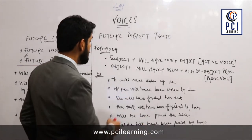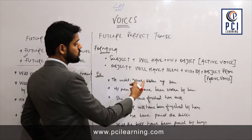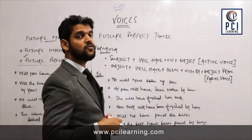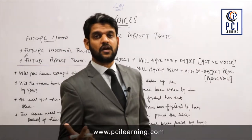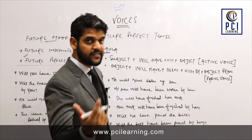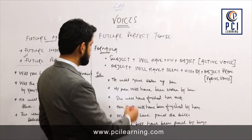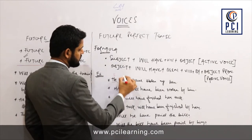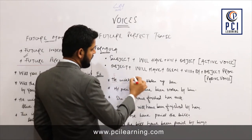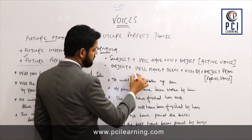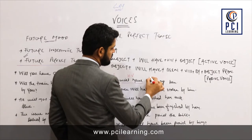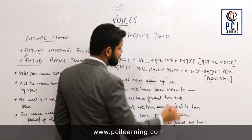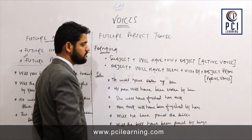Moving towards the first example: 'He will have stolen my pen' — meaning 'wo mera pen chura chuka hoga' or 'usne mera pen chura lia hoga', both having the same sense. Here 'he' is used as subject, 'will have' as helping verb, 'stolen' as third form of verb, and 'my pen' as object.